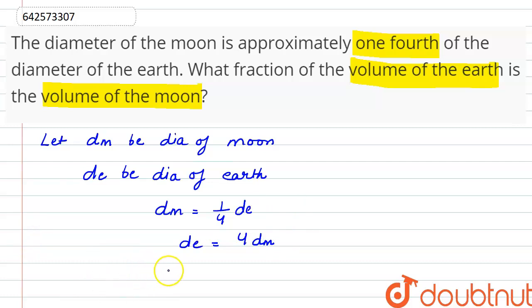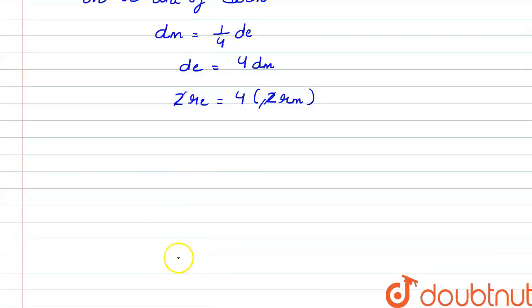So the radius of earth, that is diameter of earth, can be written as twice of radius of earth is equal to four into diameter of moon, which can also be written as twice of radius of moon. So two gets cancelled out from both the sides. The equation can be written as radius of earth is equal to four times radius of moon.